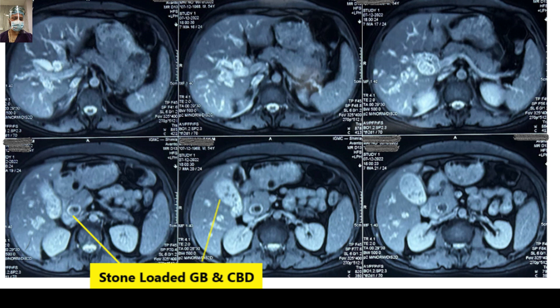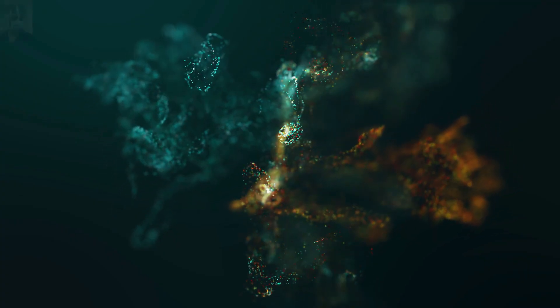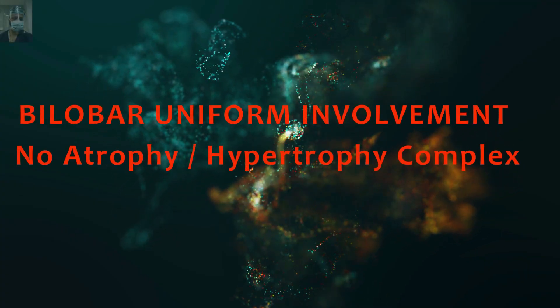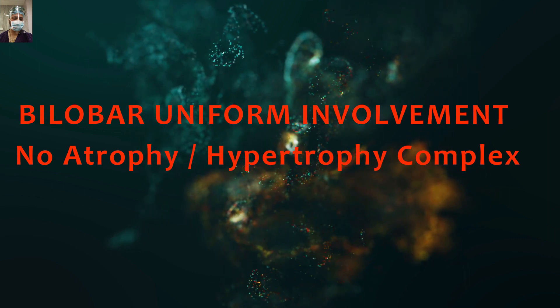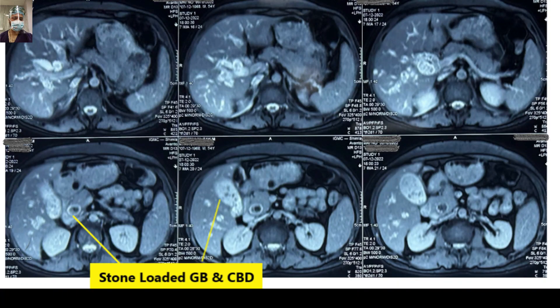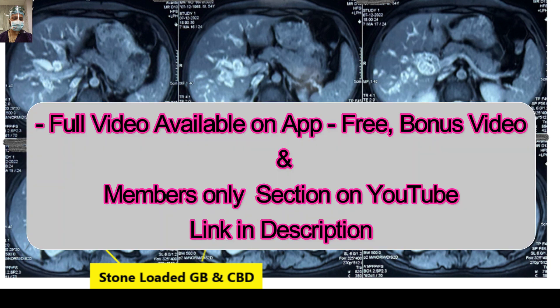Another important point from the MRI MRCP images is that there is bilateral, uniform involvement with extensive stone in the intrahepatic and extrahepatic bile duct system, and there is no atrophy-hypertrophy complex. All these findings have a bearing on management — whether we are going to perform a resection procedure or a drainage procedure.